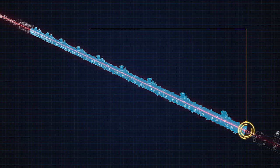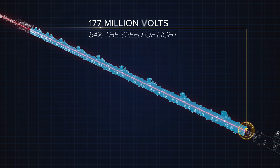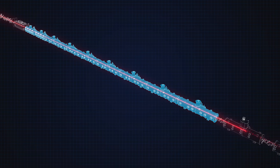When the particles exit this stage of PIP2, they are traveling at 54% of the speed of light, equivalent to an acceleration with 177 million volts, and they're about to go even faster.